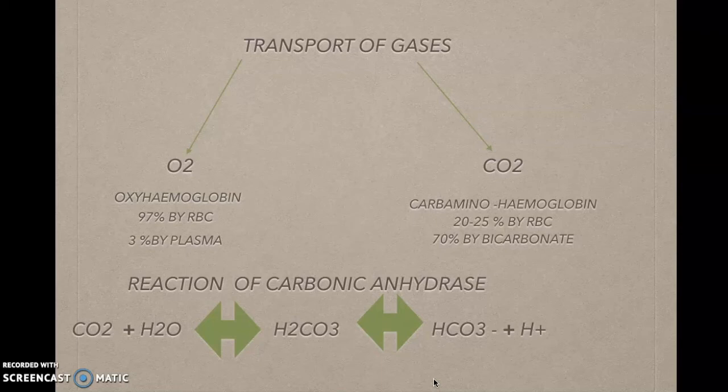There is one enzyme, carbonic anhydrase, which helps in the transportation of carbon dioxide in the blood. When CO2 from the tissues diffuses into the blood, this enzyme converts CO2 into bicarbonate (HCO3-) and H+. When the blood reaches the lungs, carbonic anhydrase converts the bicarbonate back into CO2 and H2O, so that CO2 from the blood can diffuse into the lungs and be exhaled out.